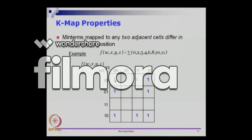If you look at any two cells which are adjacent to each other — for example, this cell corresponds to wxyz being 0001, and this cell corresponds to wxyz being 0101 — these two positions differ only in the value of x; w, y, and z are all the same.